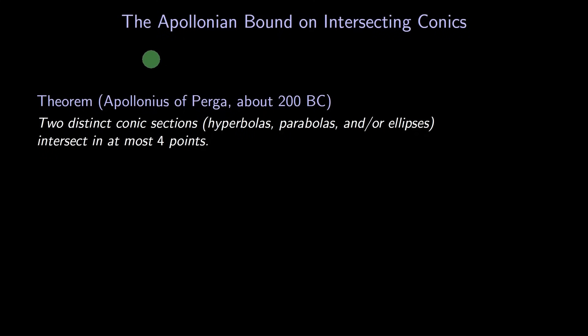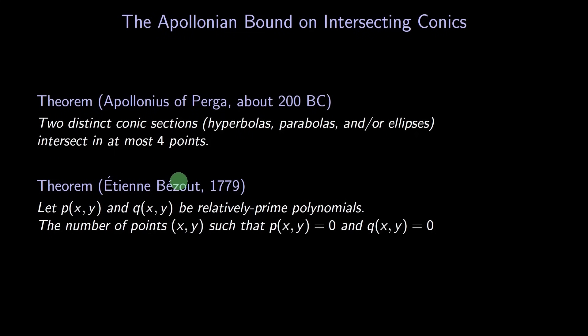Apollonius was a Greek geometer who went beyond Euclid and Archimedes in understanding conic sections. These days, we view the Apollonian bound as a special case of a result called Bezú's theorem. The Apollonian bound is for conic sections, which are quadratic curves, whereas Bezú's theorem goes beyond quadratics. Still, for this video, Apollonius is a perfect fit. Two different hyperbolas intersect in at most four points.